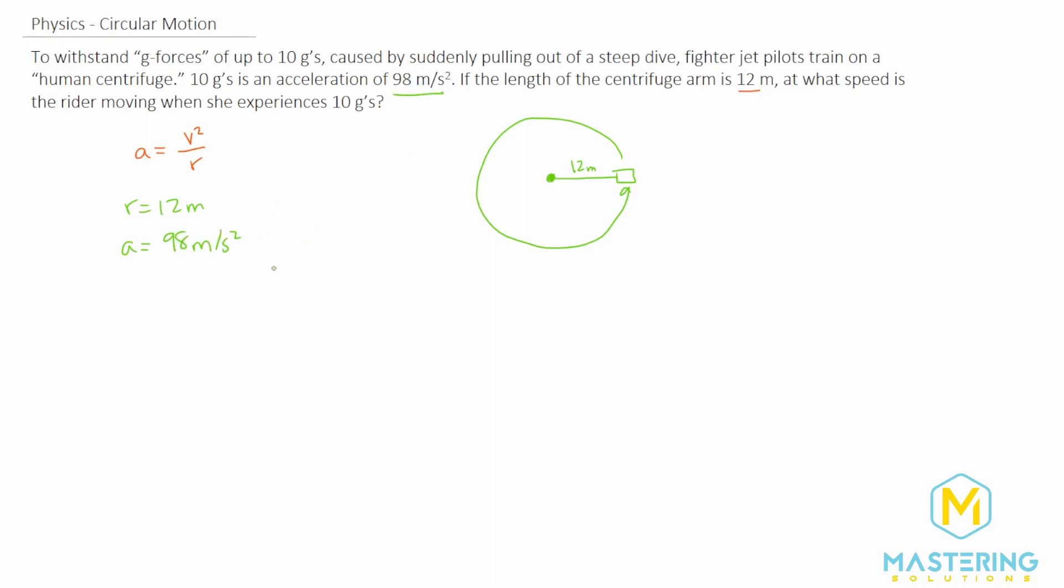That's given right here for 10 g's, and so we just need to rearrange the formula to solve for the velocity. So let's multiply both sides of the equation by r.